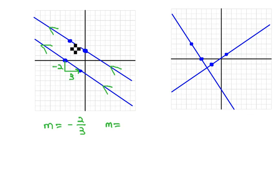Notice the slope of the second line is also down 2 over 3. The slope of the second line is also negative 2 thirds.